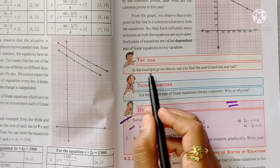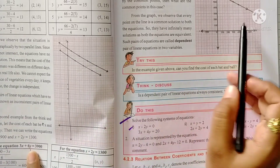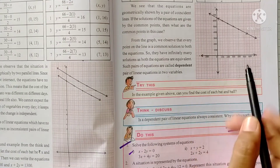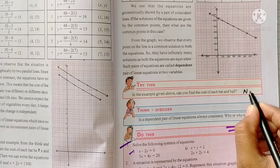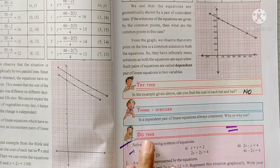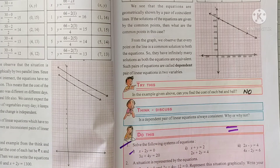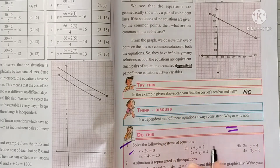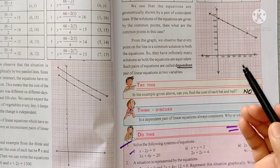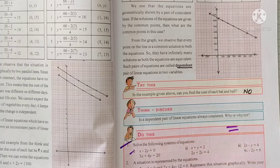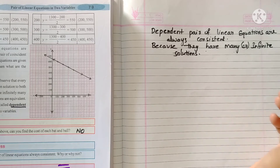Try this on page 79: in the example given above, can you find the cost of each bat and ball? These are the equations and this is the graph — the two lines are coincident, meaning they have many solutions. So we cannot find a particular cost of each bat and ball. Think discuss: is a dependent pair of linear equations always consistent? Dependent means coincident lines. Yes, they are consistent because coincident lines have infinitely many solutions. So dependent pair of linear equations are always consistent because they have infinitely many solutions.